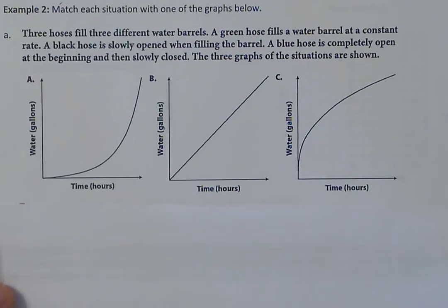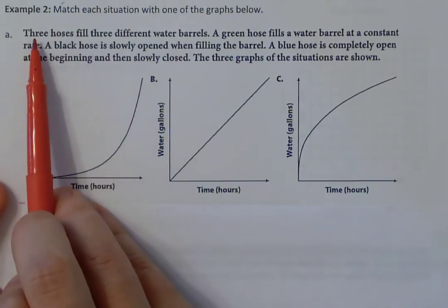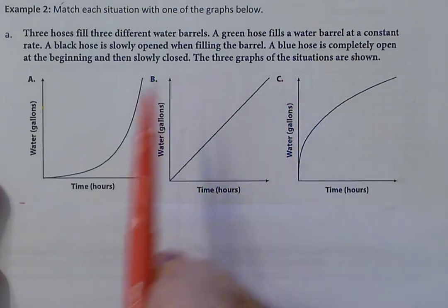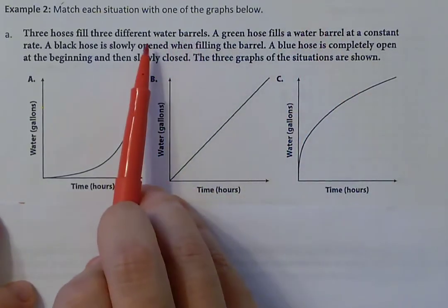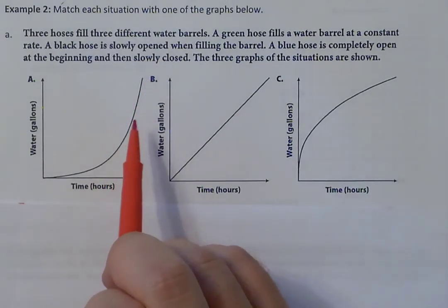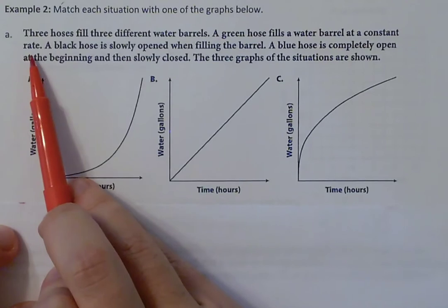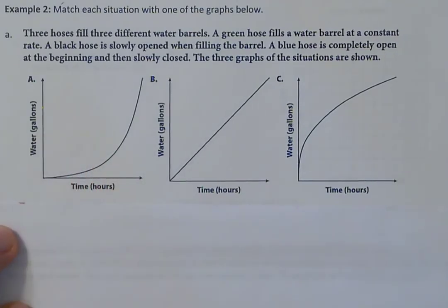Example two asks us to match each situation with one of the graphs. Example 3 states: three hoses fill three different water barrels at different rates — one faster, one slower, one consistently. The green hose fills a water barrel at a constant rate, meaning the same rate the whole time — not increasing, not decreasing, not getting faster or slowing down. Which graph shows that?